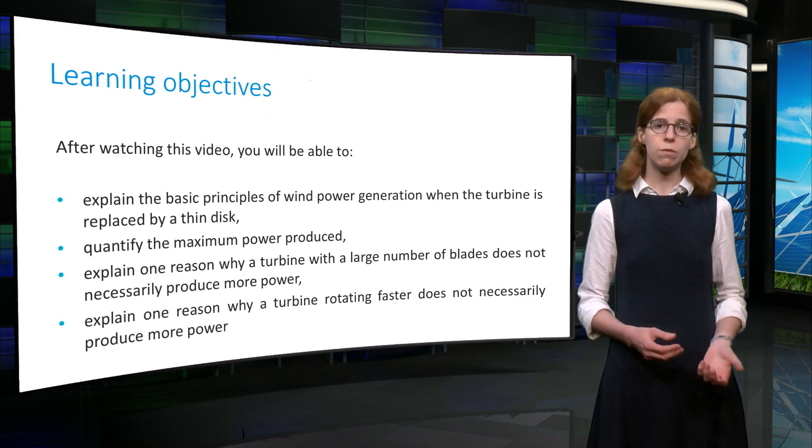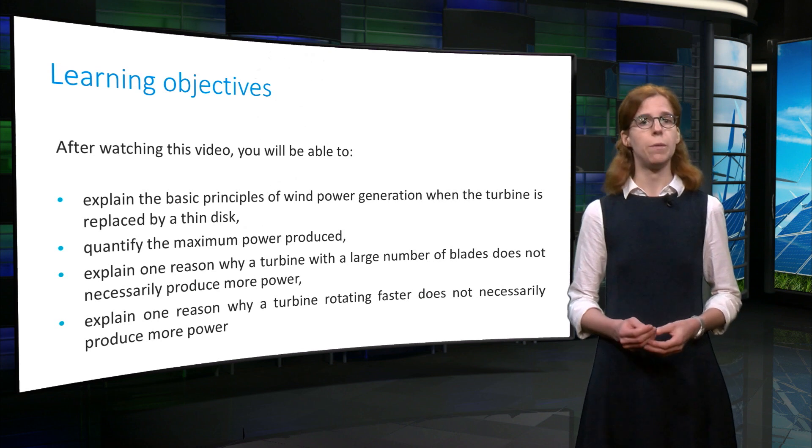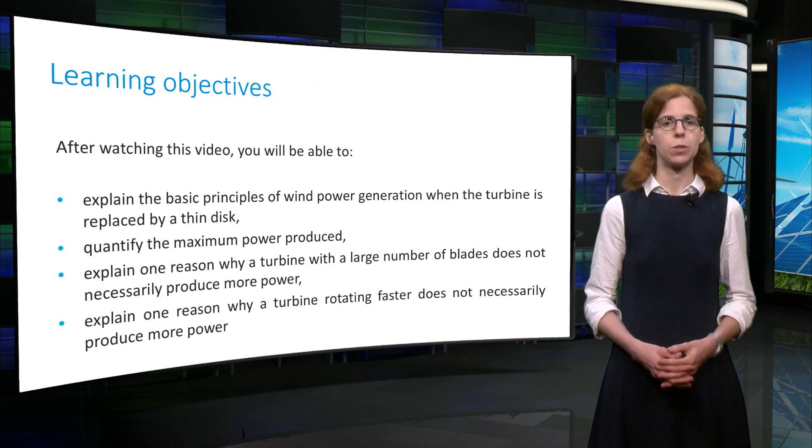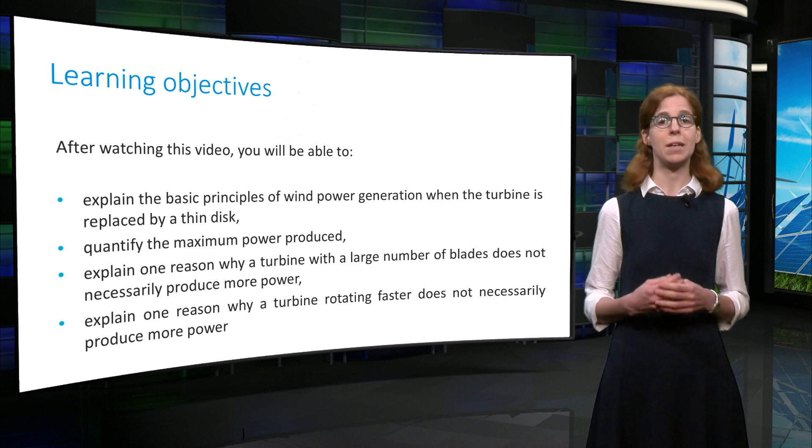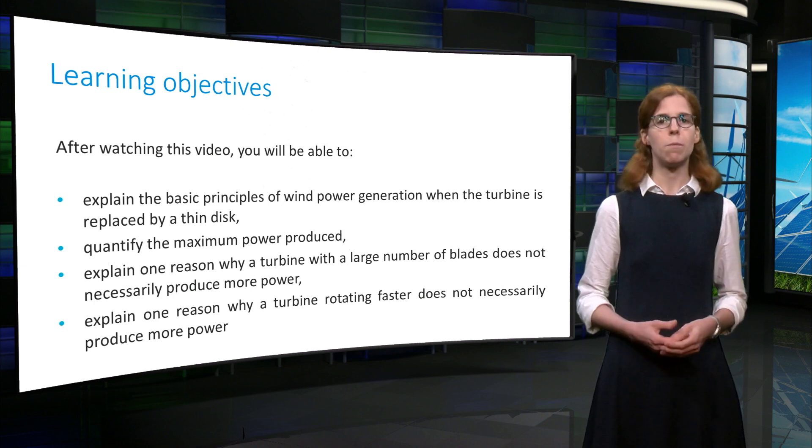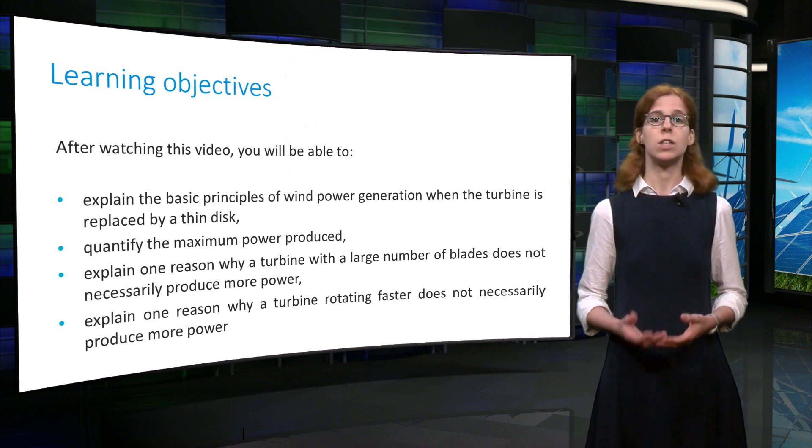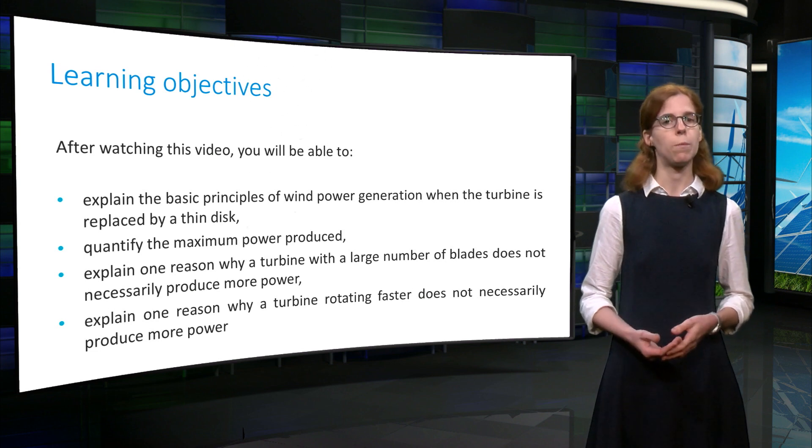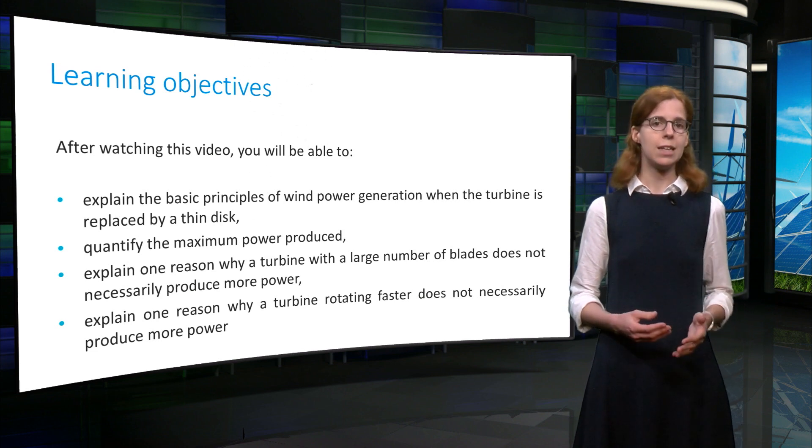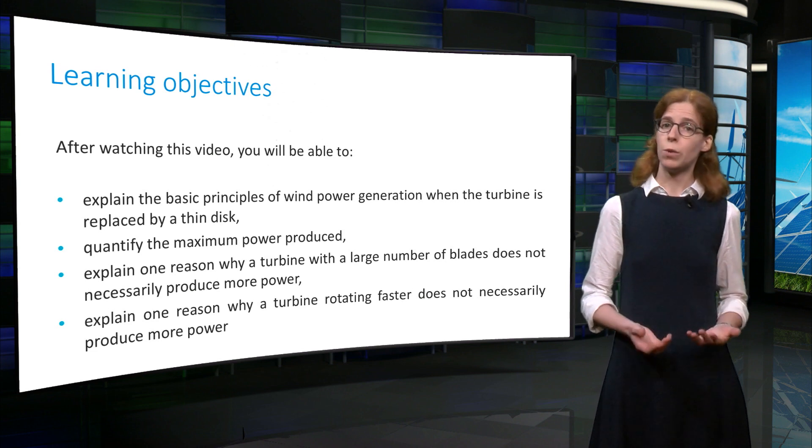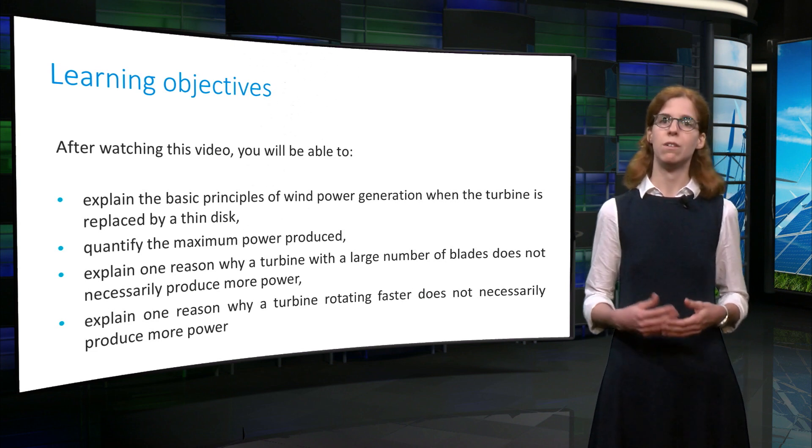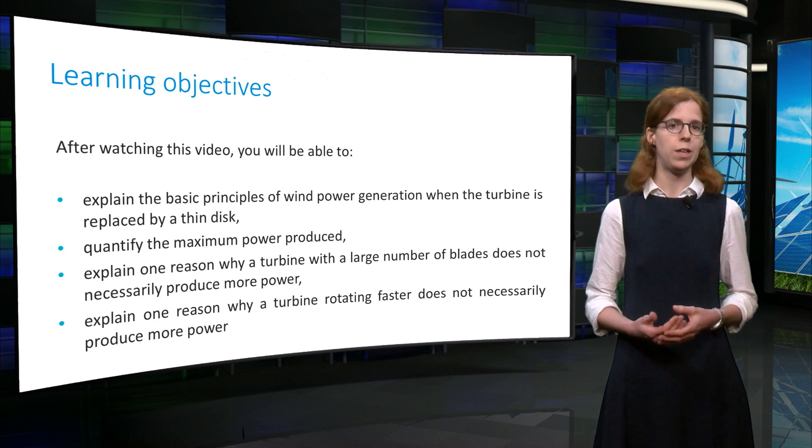You will be able to quantify, based on the same theory, the maximum power produced. And you will also be able to explain one reason why a wind turbine with a large number of blades does not necessarily produce more power. Finally, you will be able to explain one reason why a turbine rotating faster does not necessarily produce more power neither.